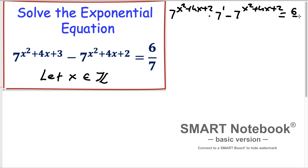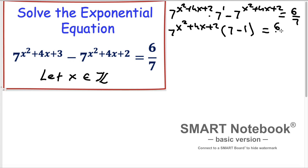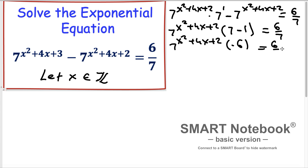Plus 2 is equal to 6 divided by 7. Now, as we see, 7 to the exponent (x² + 4x + 2) is a common factor for both terms, so let's factor it out. What remains is 7 to the exponent (x² + 4x + 2) times (7 minus 1), which equals 6 divided by 7. What remains in the parentheses is 6, so we have 7^(x² + 4x + 2) times 6 equals 6 divided by 7.